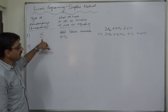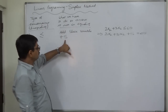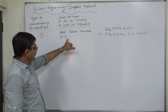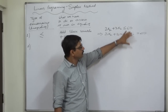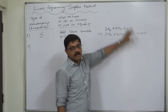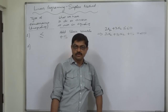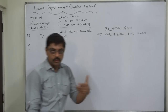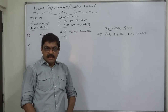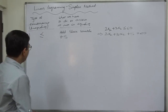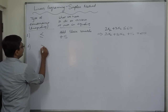So for a constraint with a less than or equal to sign, we add a slack variable. We label them s1, s2, s3, s4 according to the inequality number — s1 for the first, s2 for the second, and so on. Another possibility is the greater than or equal to sign.